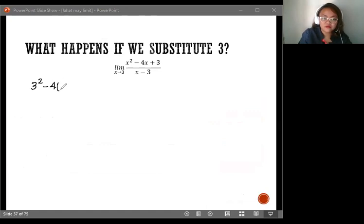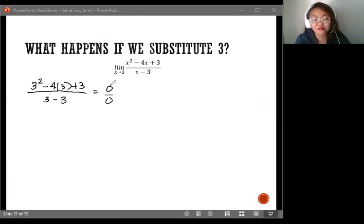3 squared minus 4 times 3 plus 3 all over 3 minus 3. So, this is 0 over 0. Unlike your tables and graphs, which yielded 2 as the limit, what we got here is 0 over 0. This is the limitation of direct substitution that requires us to do the simplification or simply factoring.